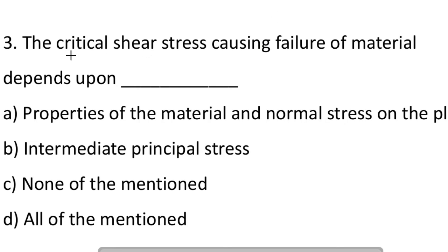The next question: the critical shear stress causing failure of material depends upon. Option A: properties of material and normal stress on the plane. Option B: intermediate principal stress. Option C: none of the mentioned. Option D: all of mentioned. So the answer is A, properties of material and normal stress on the plane.